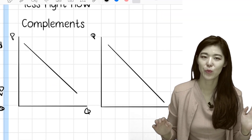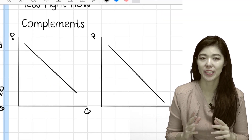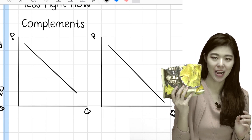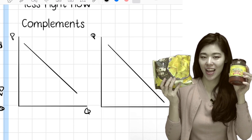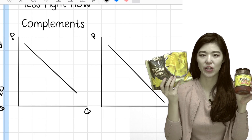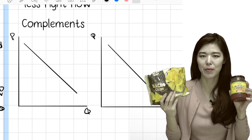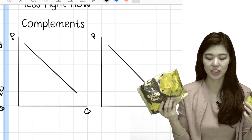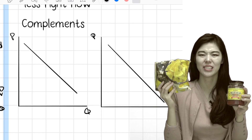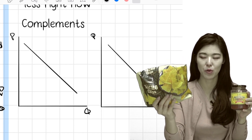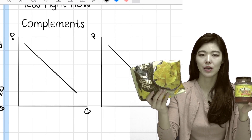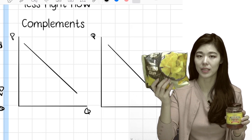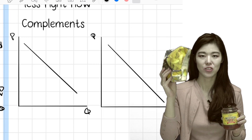So what are complements? A complement is something that you need together in order to work properly. For example, nacho chips and salsa sauce — these are complements. You can't have nacho chips without salsa sauce; it's not complete. So think about it: when the price of nachos has increased so much that you can't really buy it anymore, the demand for salsa will also decrease.